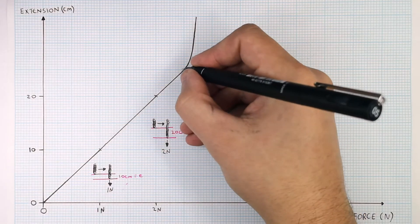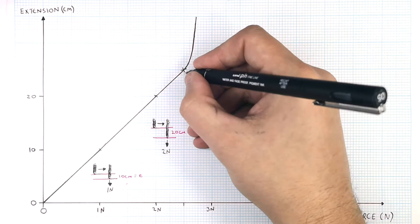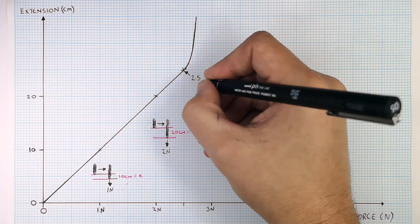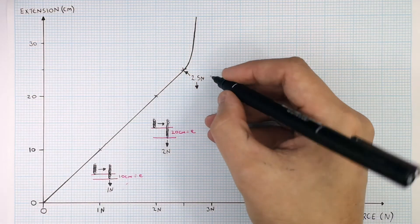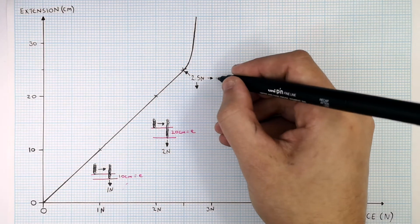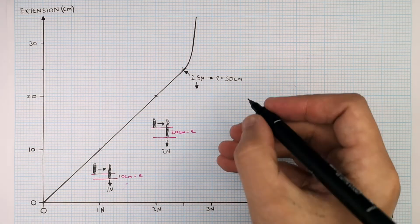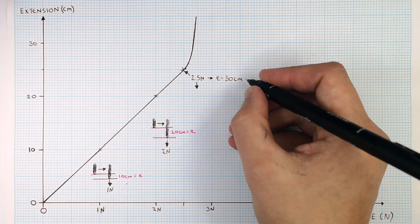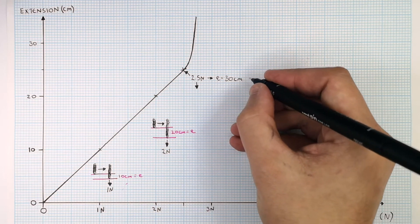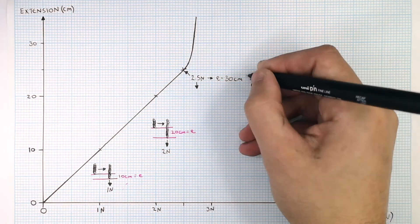We've applied a 2.5 newton force to the spring, and there's been an extension of 25 centimetres. So for this object, 2.5 newtons is the maximum force that can be applied before the extension is no longer directly proportional to the force applied. This is the limit of proportionality for this object.